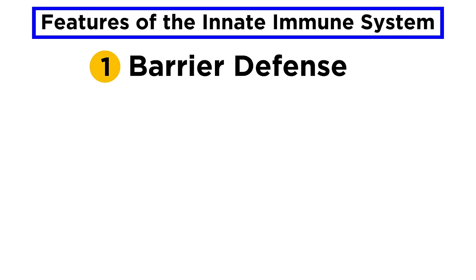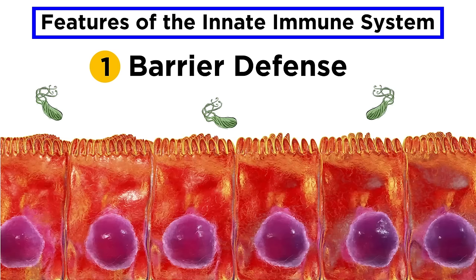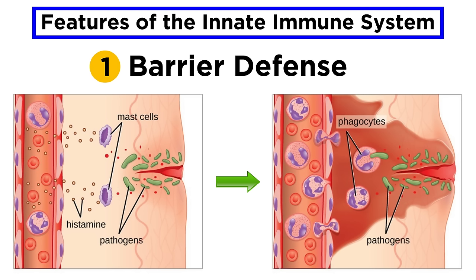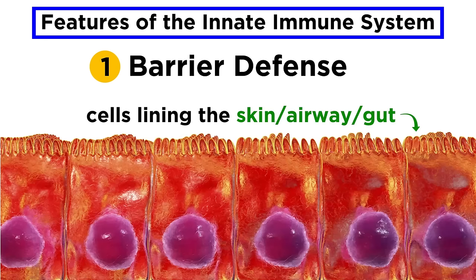The first important feature is barrier defense. We will learn about some of the many strategies our bodies have evolved to keep pathogens out of various surfaces. Barrier defense goes way beyond just structural barriers, however. There are also incredible chemical and biological defenses that occur at barrier surfaces, and many of these defenses are coordinated by the cells lining the skin, airway, and gut. These cells are right at the interface between outside and inside the body, representing the first line of defense a pathogen has to overcome to infect a host.